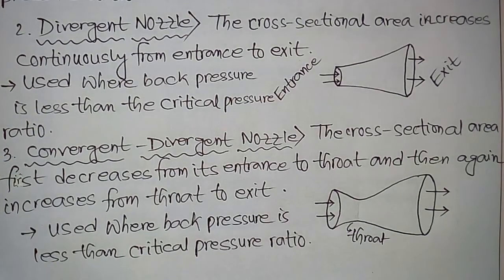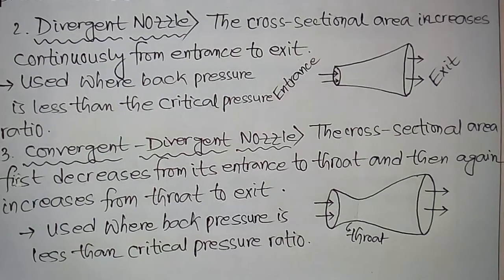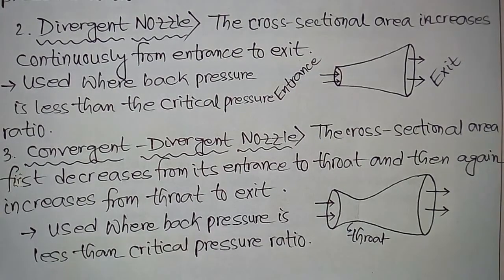The convergent-divergent nozzle is used where back pressure is less than the critical pressure ratio. It is generally used in jet engines. In this video, I discussed nozzles — their definitions, types, and applications. Thanks for watching.